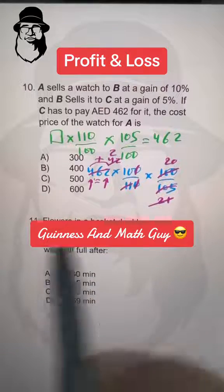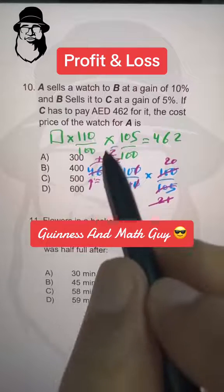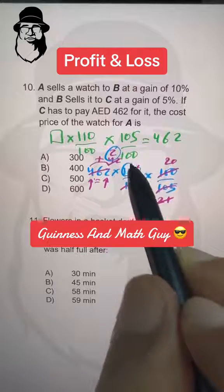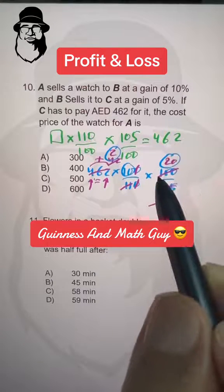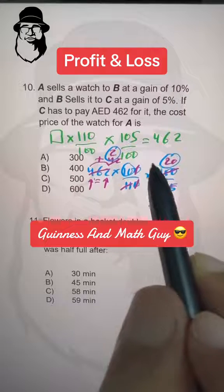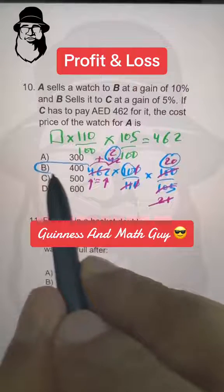Now we have, let me change the color. We have 2 here, we have 2 here, we have 10 here and we have 20 here. So 20 times 2 is 40, 40 times 10 is 400, that's our answer, choice B.